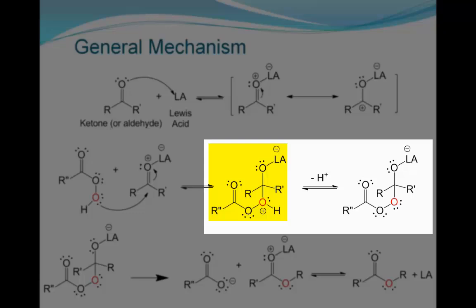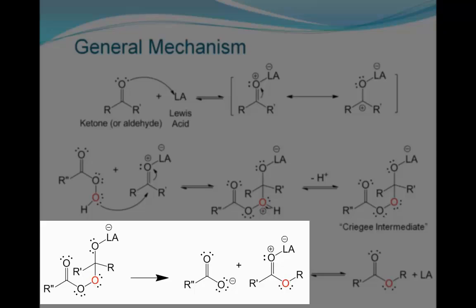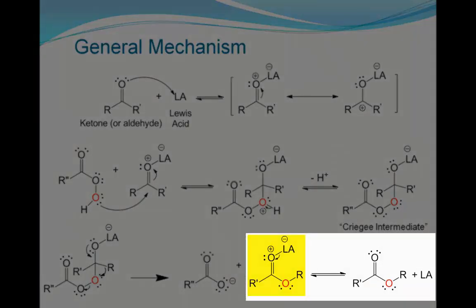This results in an unstable tetrahedral intermediate. Deprotonation of this intermediate gives way to a further unstable tetrahedral intermediate, which is sometimes referred to as a Criegee-like intermediate. The next step is generally considered to be the rate-determining step. Here, the Criegee intermediate undergoes a rearrangement that consists of simultaneous migration of one of the R groups and elimination of the resonance-stabilized anionic carboxylate. The more electron-rich R group preferentially migrates since it is more capable of donating electrons and forming a bond to the adjacent electron-deficient oxygen atom. Dissociation of the final complex regenerates the Lewis acid and liberates the final product, which is an ester.